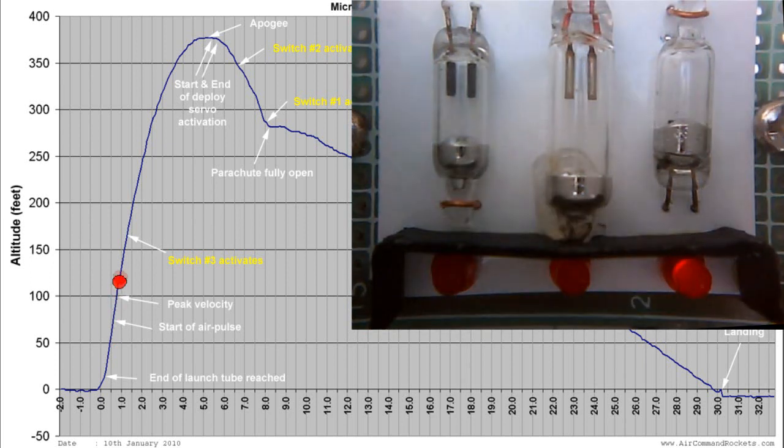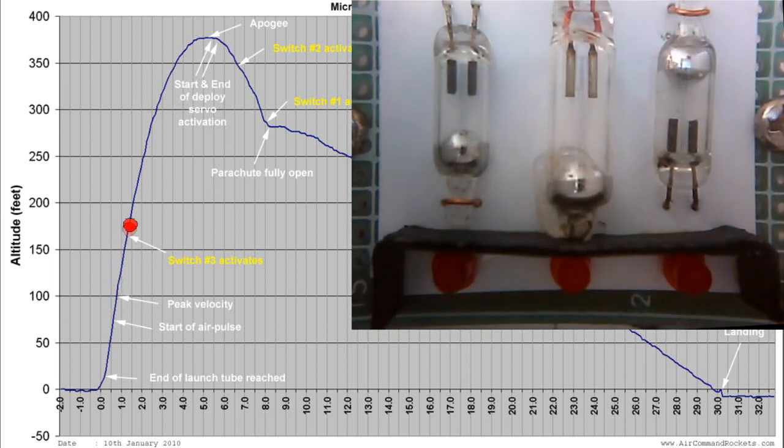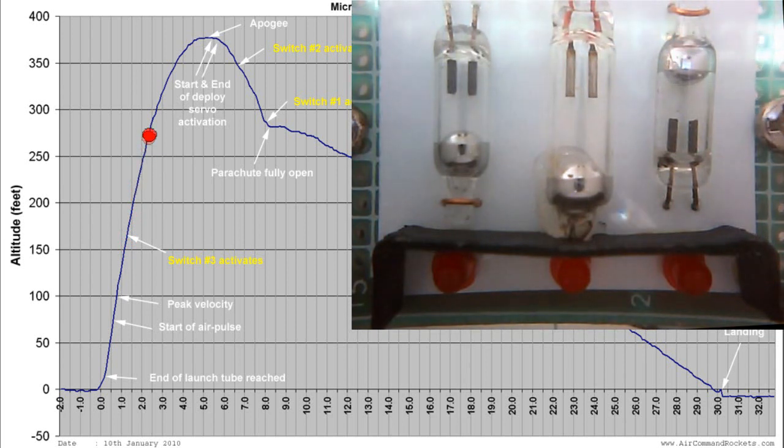Just past maximum velocity, switch number three activates. This happens because air drag on the rocket causes it to undergo negative acceleration. There is no air drag on the mercury bead and so its inertia carries it forward.